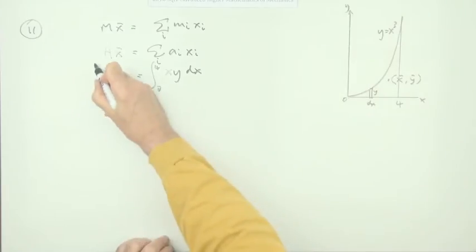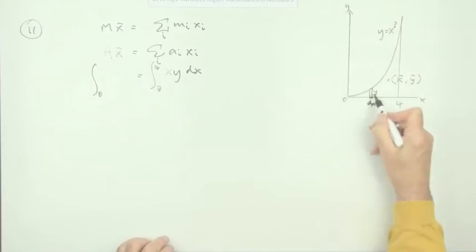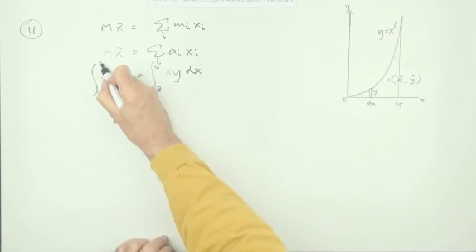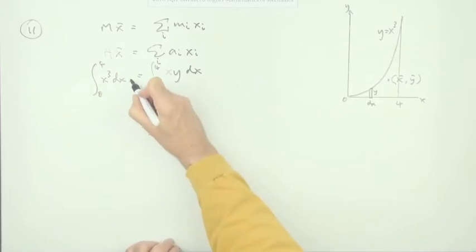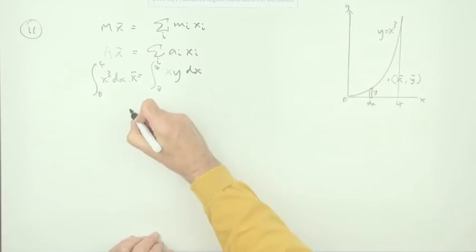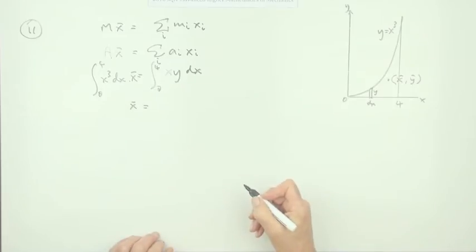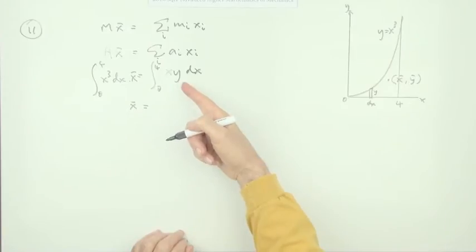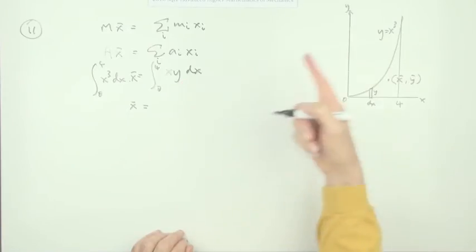Now the area of the whole thing is simply the area under this curve will just be x cubed dy from 0 to 4. So that times x̄ should equal this. That's just the case of working all of these out. So, but this will be useful for the second part. First of all, we'll have to change that y into something in terms of x. And y is equal to x cubed.